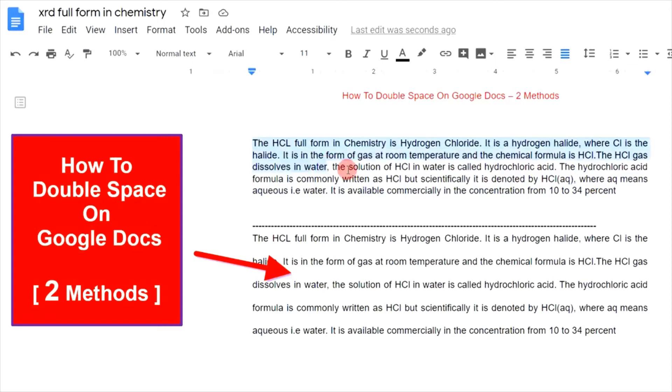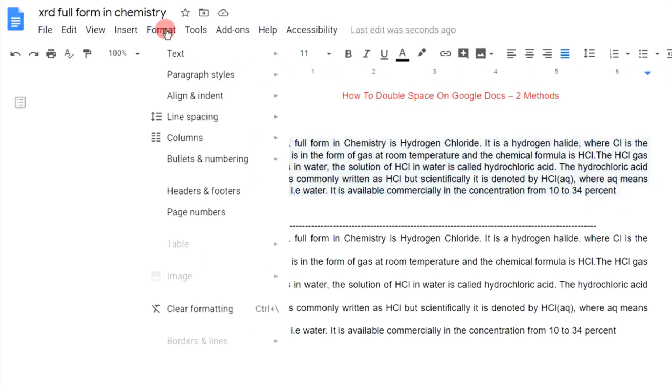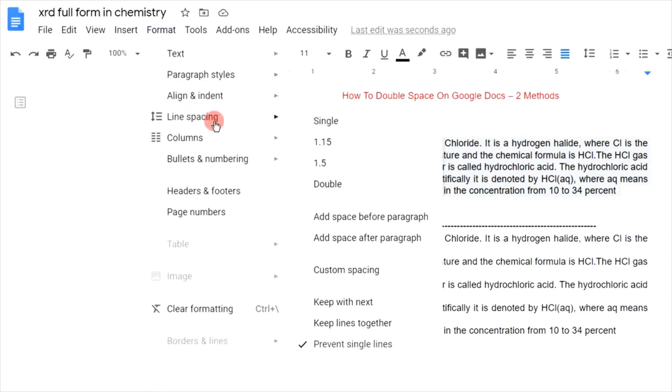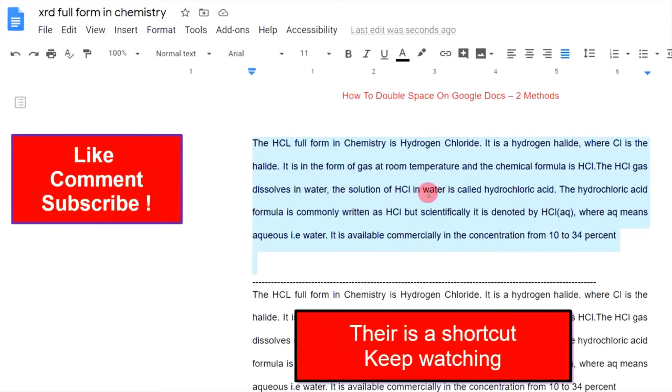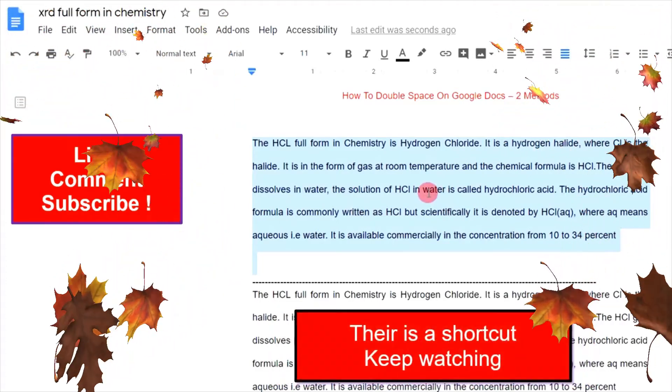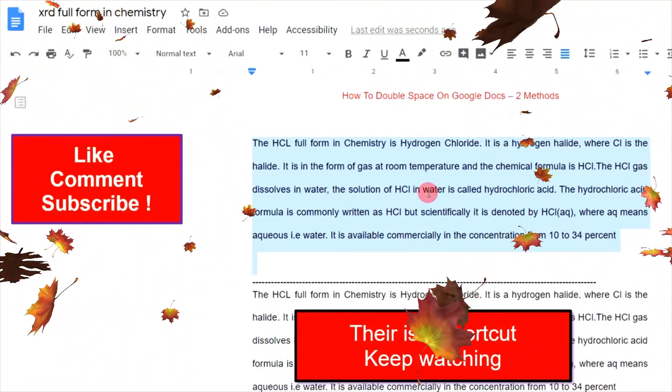To double-space on Google Docs, select the paragraph and then go to the format option. Here you will see line spacing. Under the line spacing, click on double and the double-space will be added on the Google Docs. Also, one more shortcut.